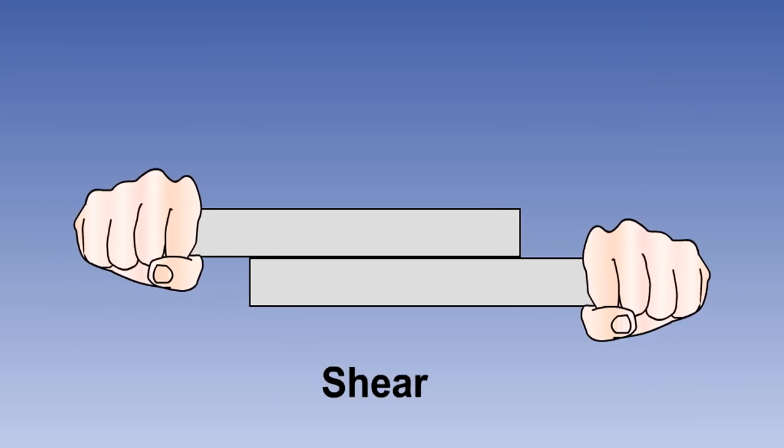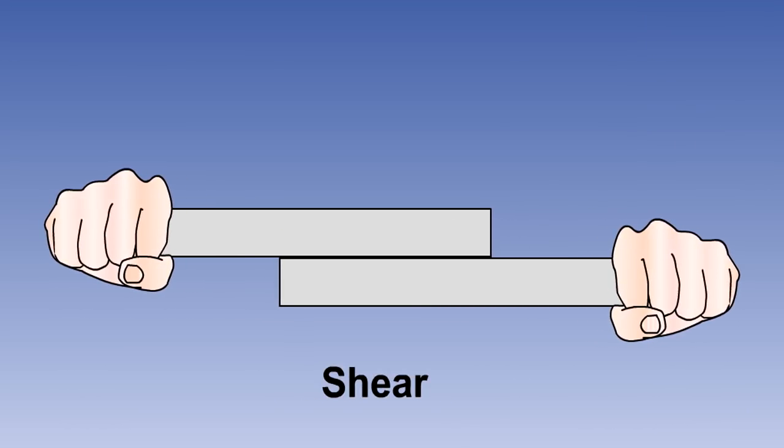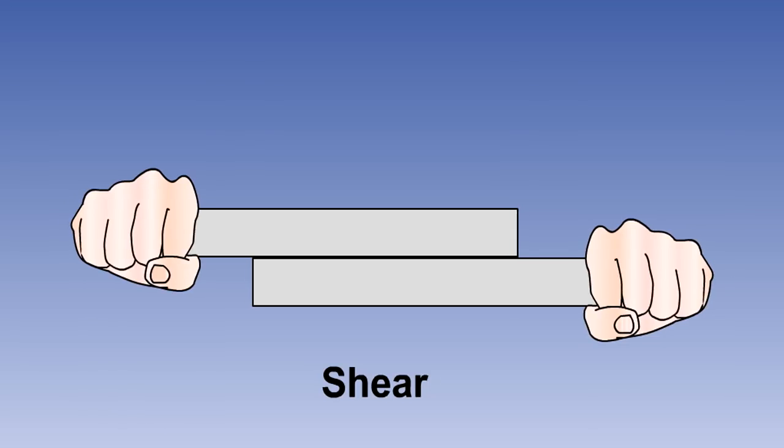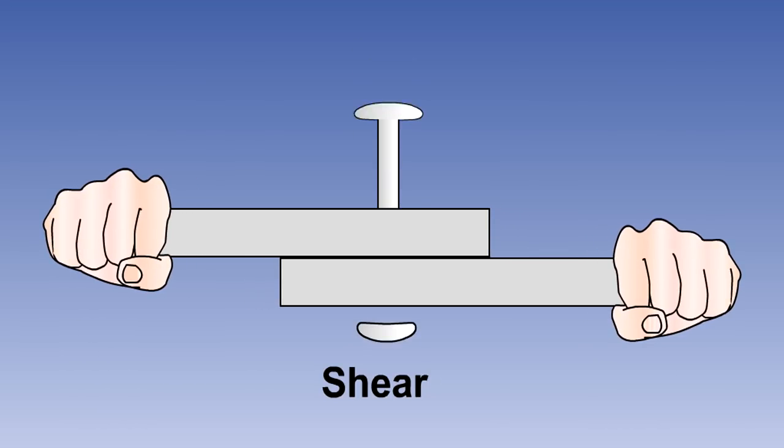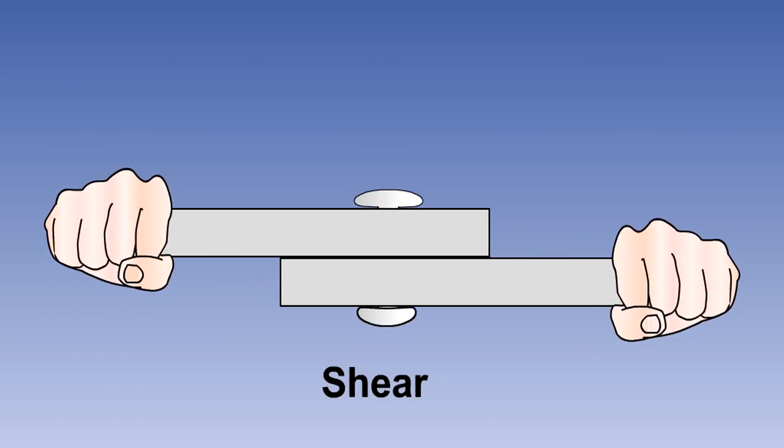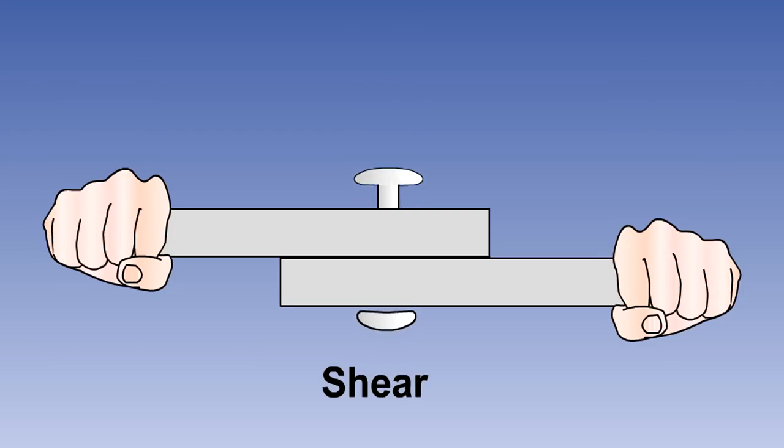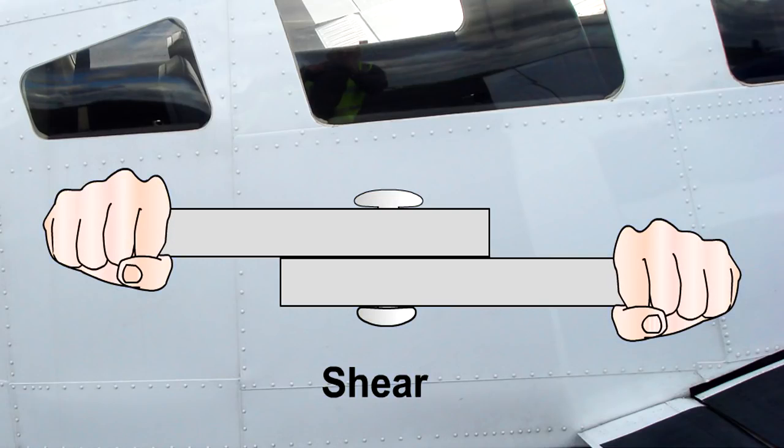Shear is a force which tends to slide one face of the material over an adjacent face. Riveted joints are designed to resist shear forces. Rivets are being used in this picture to fasten the fuselage skin to the frame. In modern aircraft they are being replaced by adhesive bonding processes.